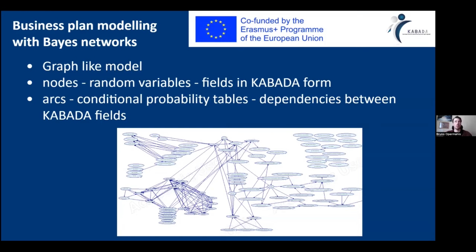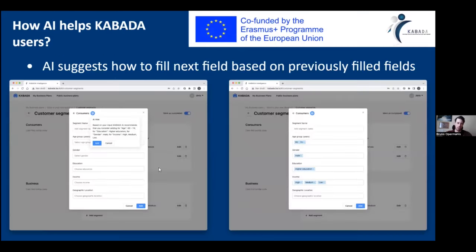For this, in the heart of the recommender engine, there needs to be some kind of business plan model. We use Bayesian networks to model business plans. Bayesian networks are graph-like models where nodes are random variables which correspond to fields in the Kabada form. For example, one of these nodes in the graph corresponds to an age group, like 65 to 74. There is a node for each completable field.